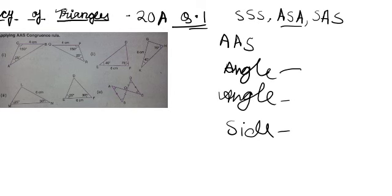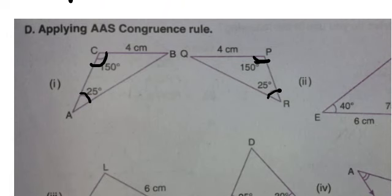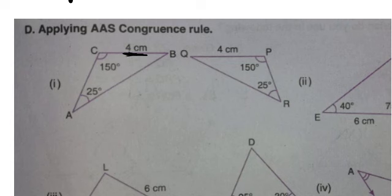Now what is the difference between ASA and AAS? In AAS, you can see that two adjacent angles are given — that is, on the same line. For example, 150 degrees and 25 degrees are two adjacent angles lying on the same line, and then there is one side which is opposite to these two angles — four centimeters.